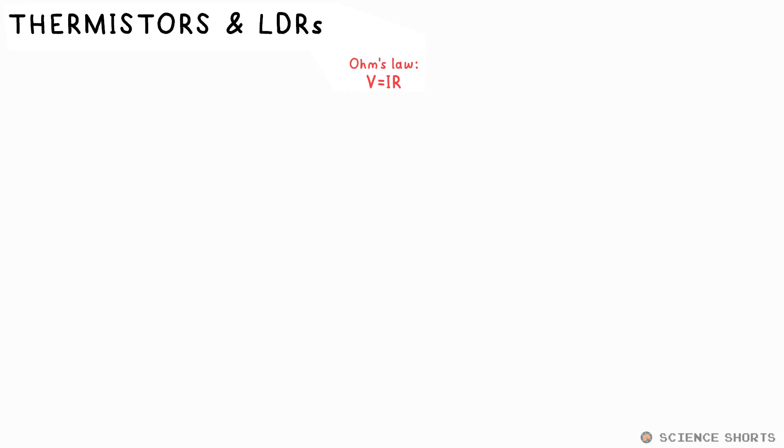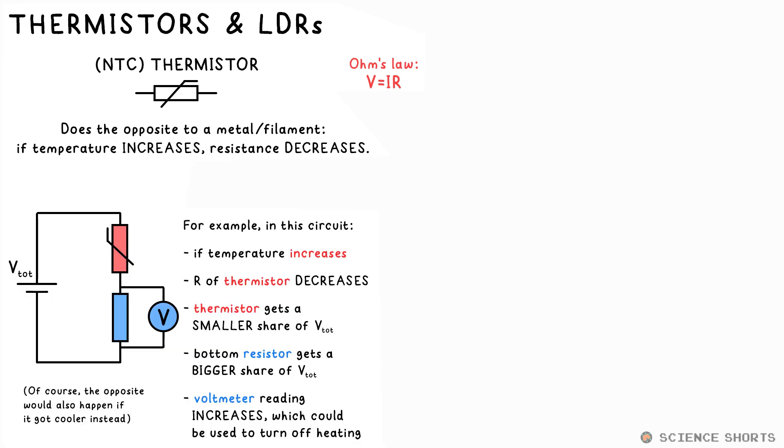It's not only metals that can change resistance. We can have a thermistor, and you can have a circuit that responds to changes in temperature. A thermistor's resistance decreases if the temperature increases. So, in essence, it does the opposite to a metal. By the way, you might see it called an NTC thermistor, a negative temperature coefficient. That just means the higher the temperature, the lower the resistance. In this case, if the resistance increased, the resistance of the thermistor would go down, as does its share of the total PD. That means the PD measured by this voltmeter here will increase. This could be the basis of a temperature sensor for your central heating, for example.